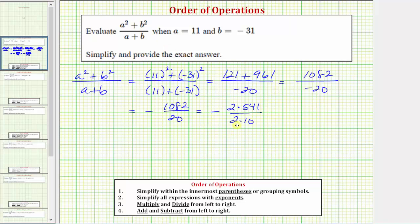Now we can see the common factor of two. Two divided by two simplifies to one, which gives us negative 541 tenths. And because the only common factor between 541 and 10 is one, we know the fraction is in simplest form, and therefore the exact value as a fraction is negative 541 tenths.